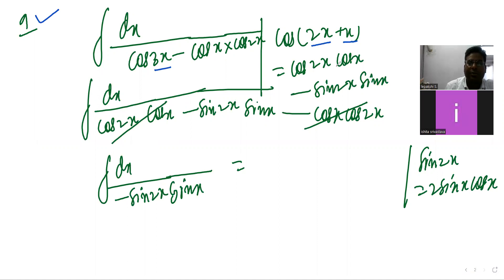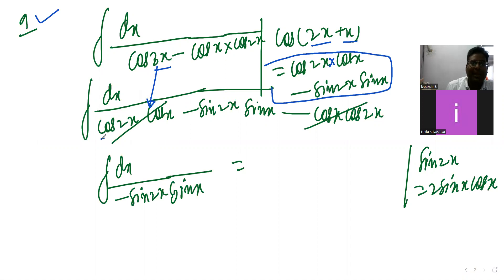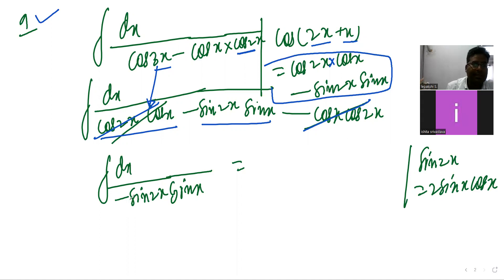Expand it: cos(2x + x) = cos2x·cosx minus sin2x·sinx. Substitute this expanded form instead of cos3x. Note there is a printing mistake in the question — please multiply this one with cos2x. The cos2x·cosx terms cancel, so remaining is: integration of dx divided by (minus sin2x·sinx).